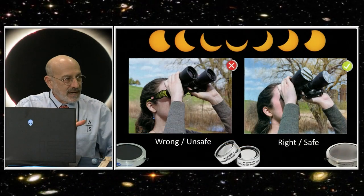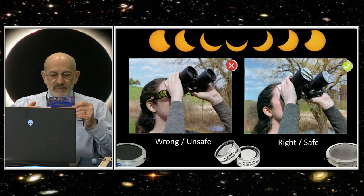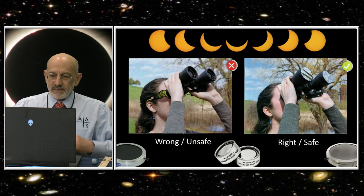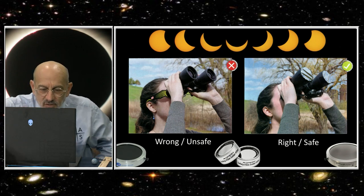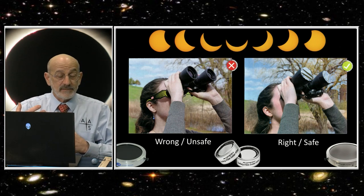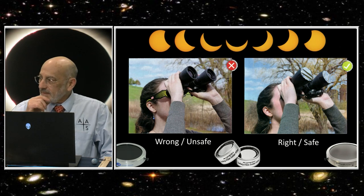It's very important that you not be looking into unfiltered optics—telescope, binoculars, camera lenses—through these. The concentrated sunlight will melt this filter instantly. If you're going to look or take pictures through a telescope or binoculars or a camera, you have to use a special-purpose solar filter over the front. It's important to have it over the front.